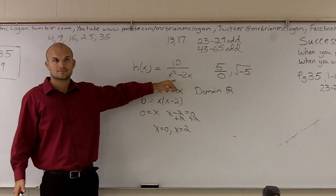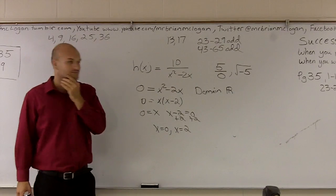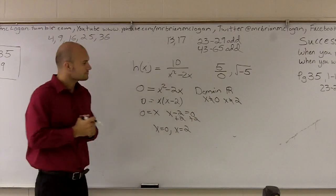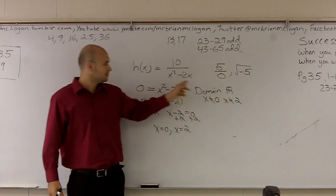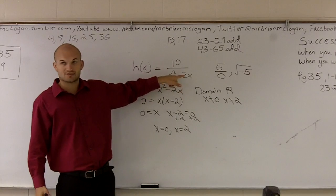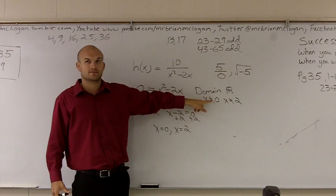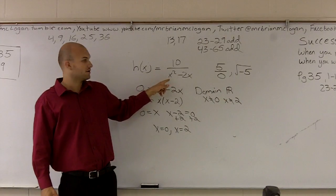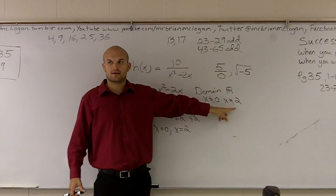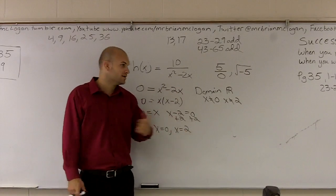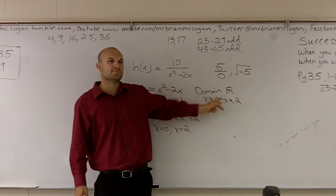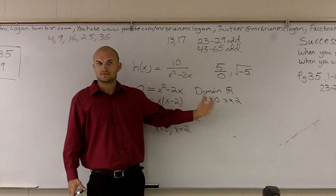Student: So you're solving for what is not x — what cannot be x? Teacher: What I'm doing is, if you plug in zero, zero squared is zero, minus two times zero is zero. So then your equation is 10 divided by zero — is that possible? No. So zero is not a part of the domain. If I plug in two, two squared is four, minus two times two is four minus four is zero. Therefore two cannot be a part of the domain. All other numbers — negative five, 15, 3.87 — all other numbers work. Those are the only two numbers that make it zero on the bottom, so they're not a part of our domain.